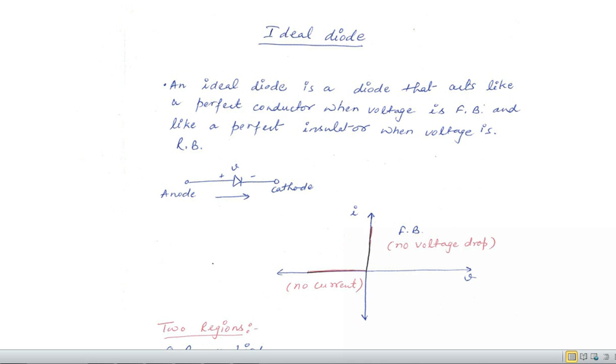That's why there is no voltage drop in the forward bias and there is no current in the reverse bias, I is equal to 0. Because when the diode is operating in reverse bias it has infinite resistance. So I is equal to V by R and when R is equal to infinite the value of current is 0.